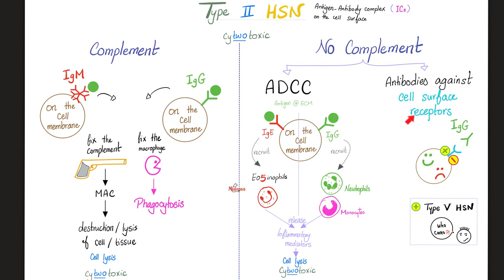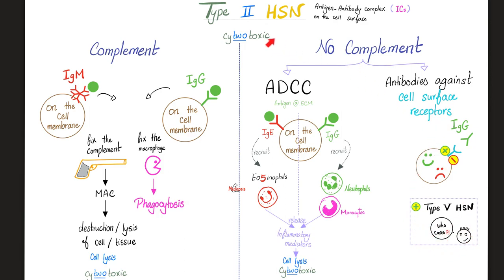Antibodies against cell surface receptors can either stimulate the target organ, as in Graves' disease causing hyperthyroidism, or inhibit the target organ, as in myasthenia gravis. Inhibition is the norm for antibodies; stimulation is unusual — which is why some previously called it type 5 hypersensitivity. But the pathogenesis is the same as type 2, so that classification was abandoned.